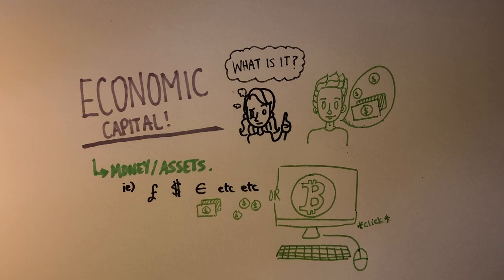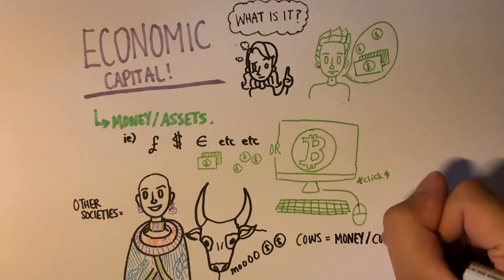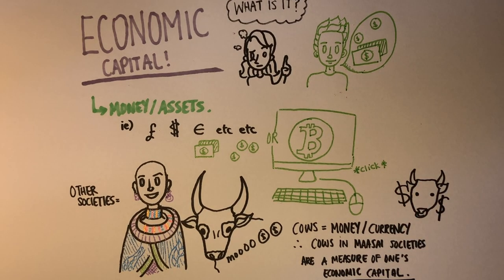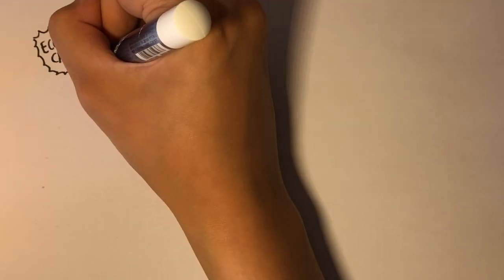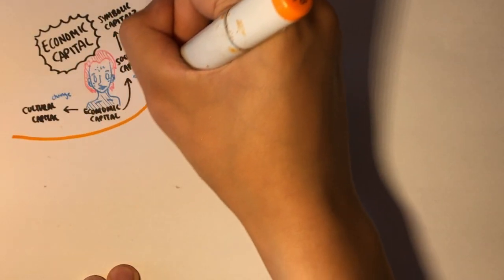However, it should be noted that other societies traditionally have used other just as legitimate forms of economic capital. The Maasai, for example, used cows as a form of currency, which means in their society, cows are a means of measuring economic capital. It should also be noted that economic capital is considered to be the most important species of capital in the social world, because economic capital can be turned into other forms of capital over time, which we will talk more about later when we go into the cycle of capital and labor time.